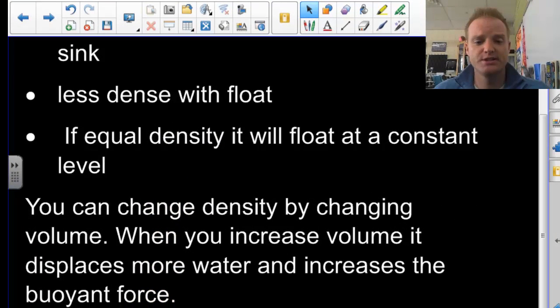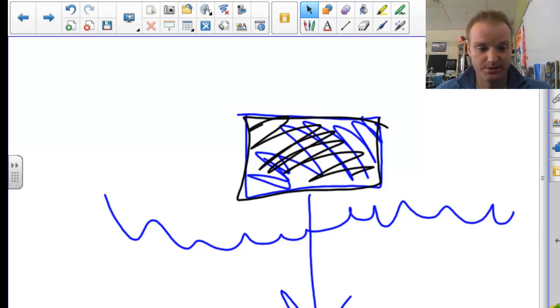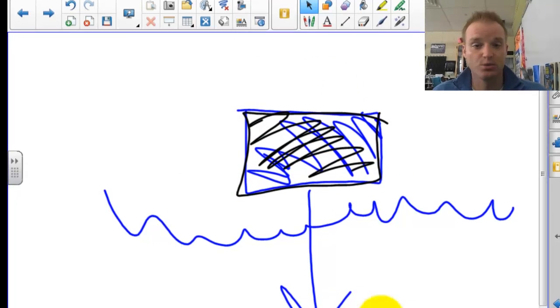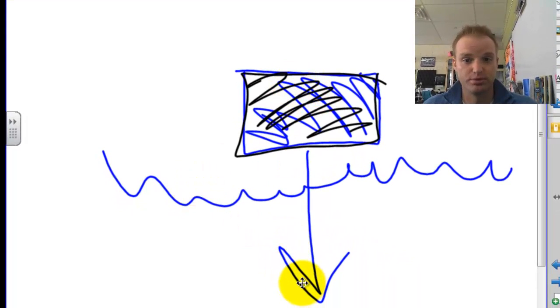You can change density by changing the volume. When you increase the volume, it displaces more water and increases the buoyant force. So, how do we get these massive ships? Think about an aircraft carrier. They're basically tons and tons of steel. Well, steel is more dense than water. It should sink. Well, what we can do is change its volume. Here's that brick of steel before. And it's going to sink. It is way more dense than water.